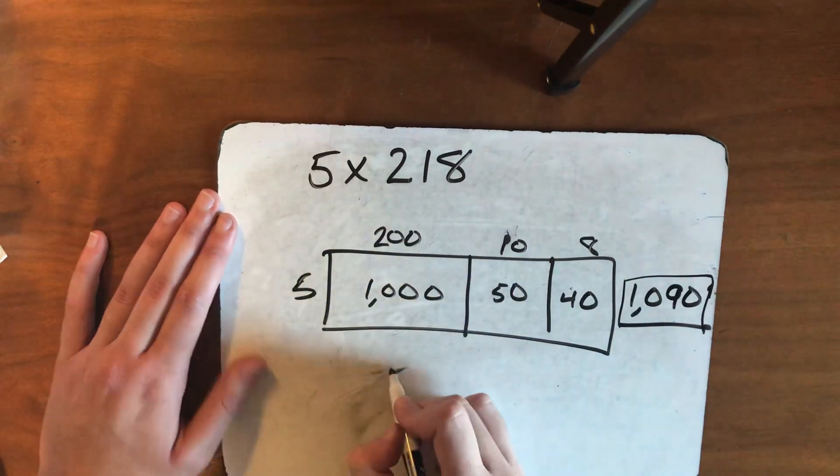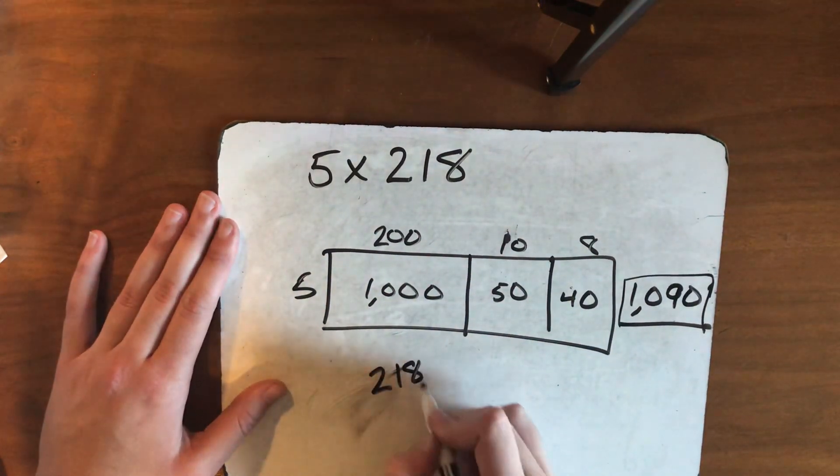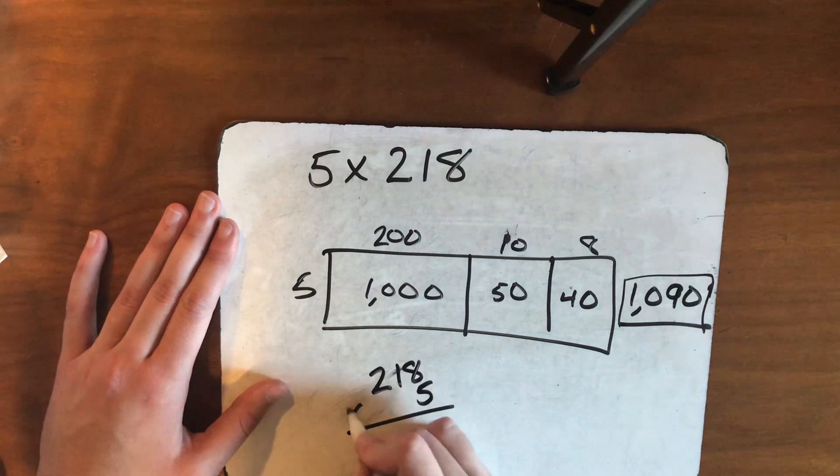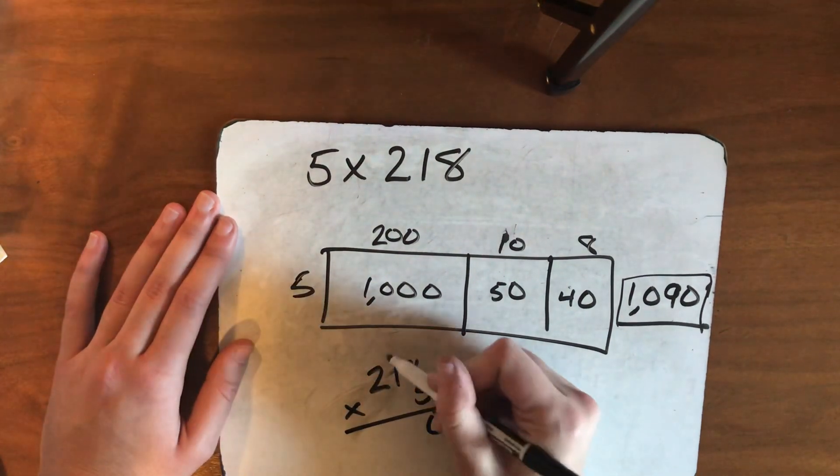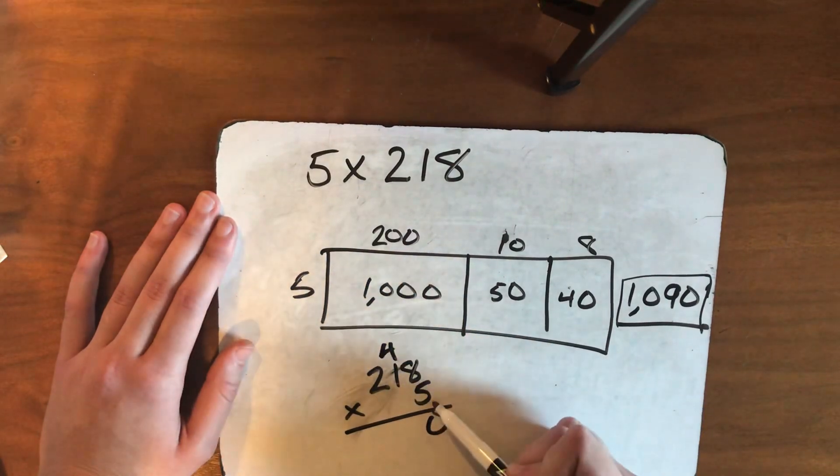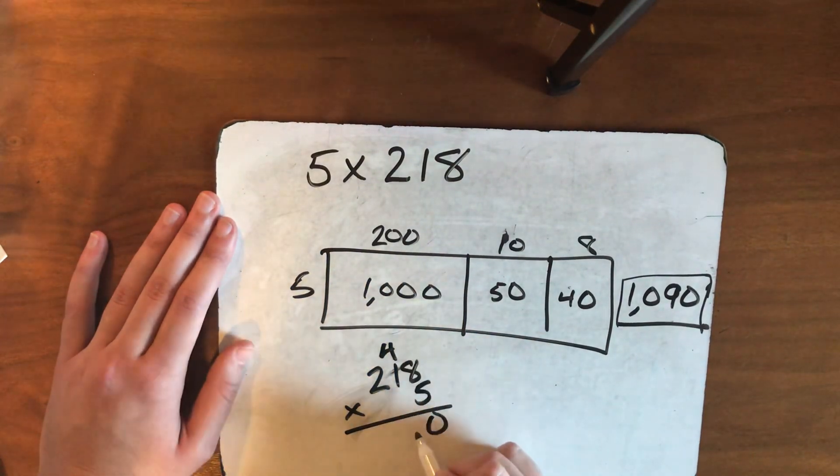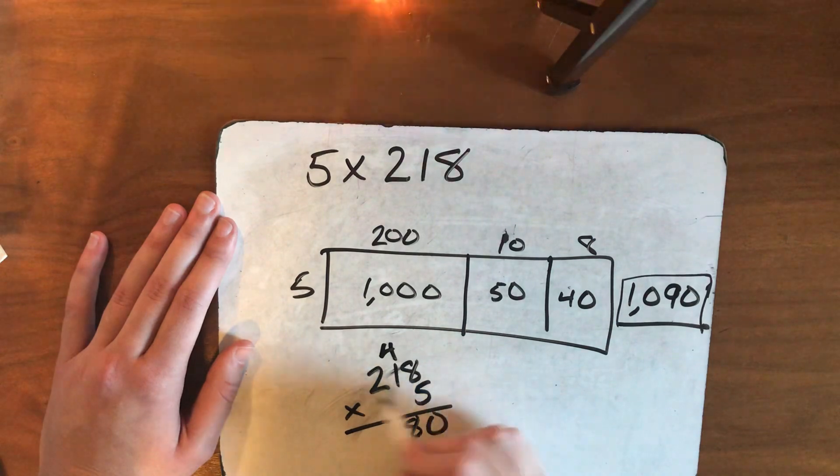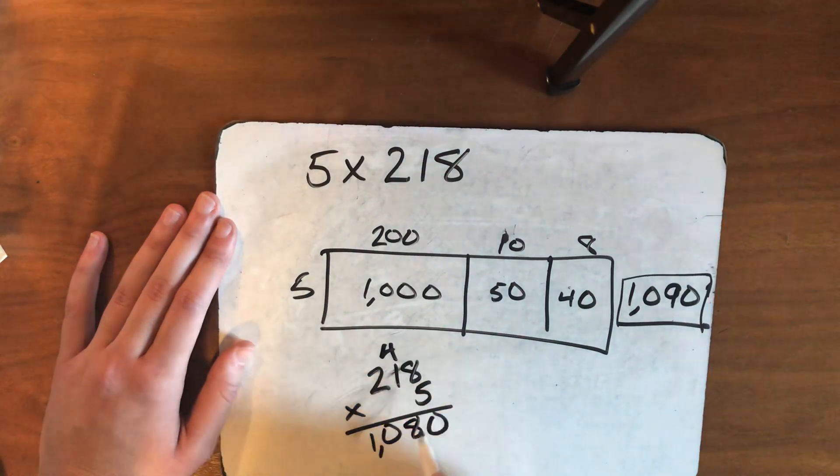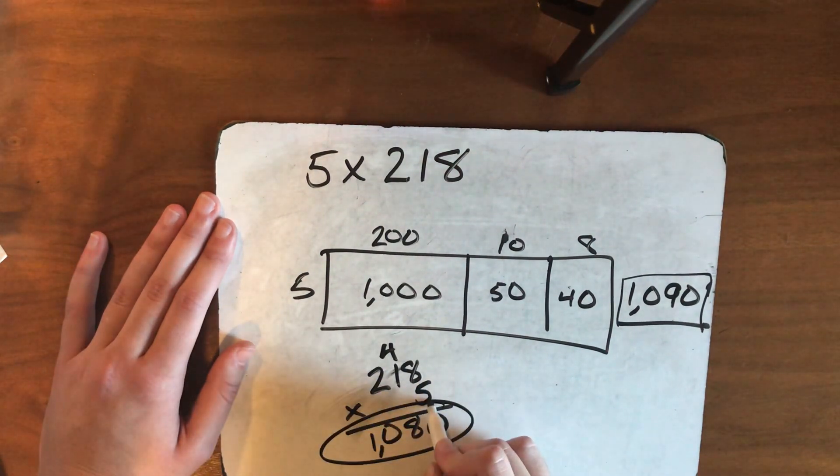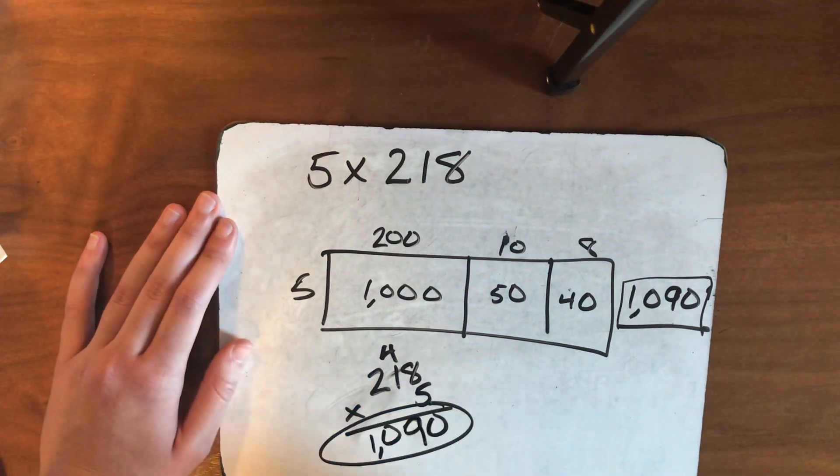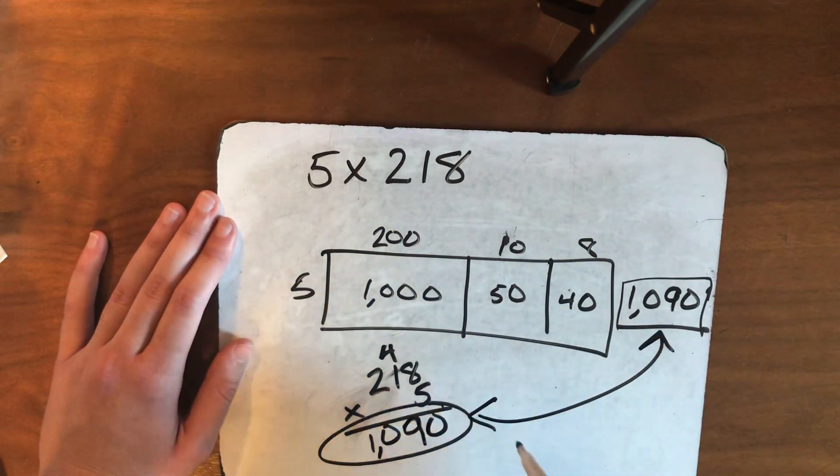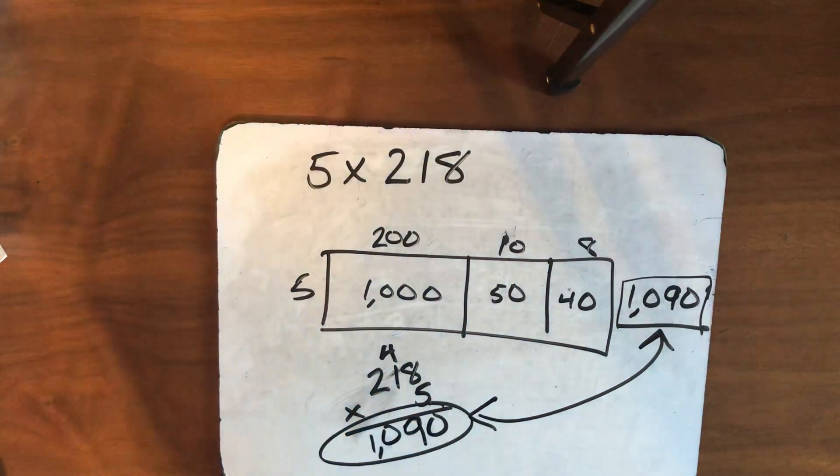Time to check this way. Try this on your Nearpod board. All right, to check, 8 times 5 is 40. Carry my 4. 5 times 1 is 5. Plus 4, 9. 2 times 5 is 10. Add my comma. We did something wrong. 5 plus 4 is not 8. It's 9. There we go. Now they match. Phew, Miss Hope. She's going crazy.